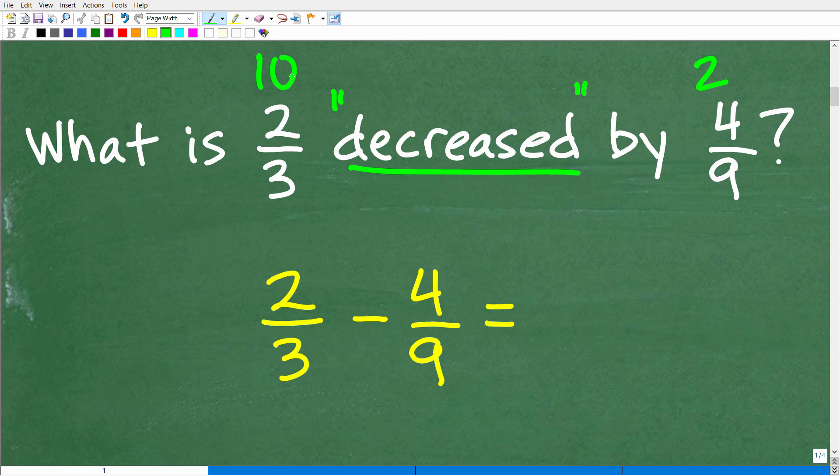So again, we just saw that we're going to be subtracting. So if we take 10 and we decrease it by two, that means 10 minus two. So in this case, we're going to take two thirds and we're going to decrease it by four ninths. So this means take two thirds and subtract four ninths away from it. So we have two thirds minus four ninths.